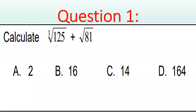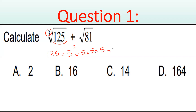Question one — we are going to calculate. The options are 2, 16, 14, and 164. First of all, as you see, you have the cube root of 125. We are going to write 125 as a power. Five to the power of three works, because five times five times five equals 125. So I write it as 5³, and since we have a cube root (power of three), they cancel, leaving just five.